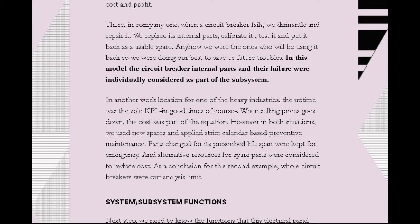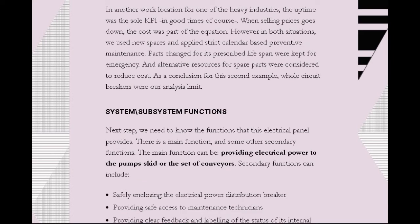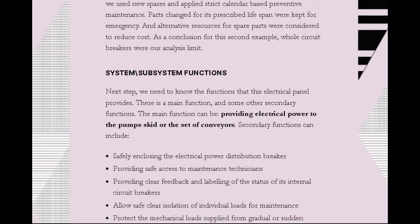Those are two different schemes. You need to understand the scheme of your workplace: if minimum cost means repairing internal parts, then that is the limit of your analysis of the circuit breaker. If you should replace the part completely, that sets the minimum boundary of your analysis. So when putting boundaries and listing parts for a pump skid or conveyor supplied from an electrical distribution panel, the main function of that panel is to provide electrical power to the pump skid, compressor, or conveyor system.